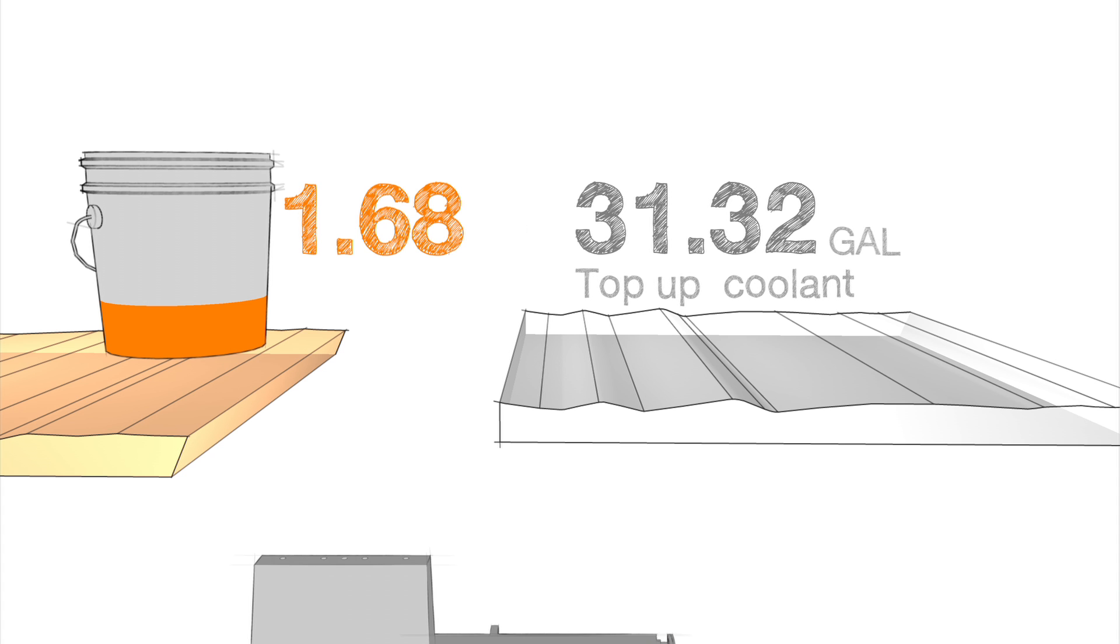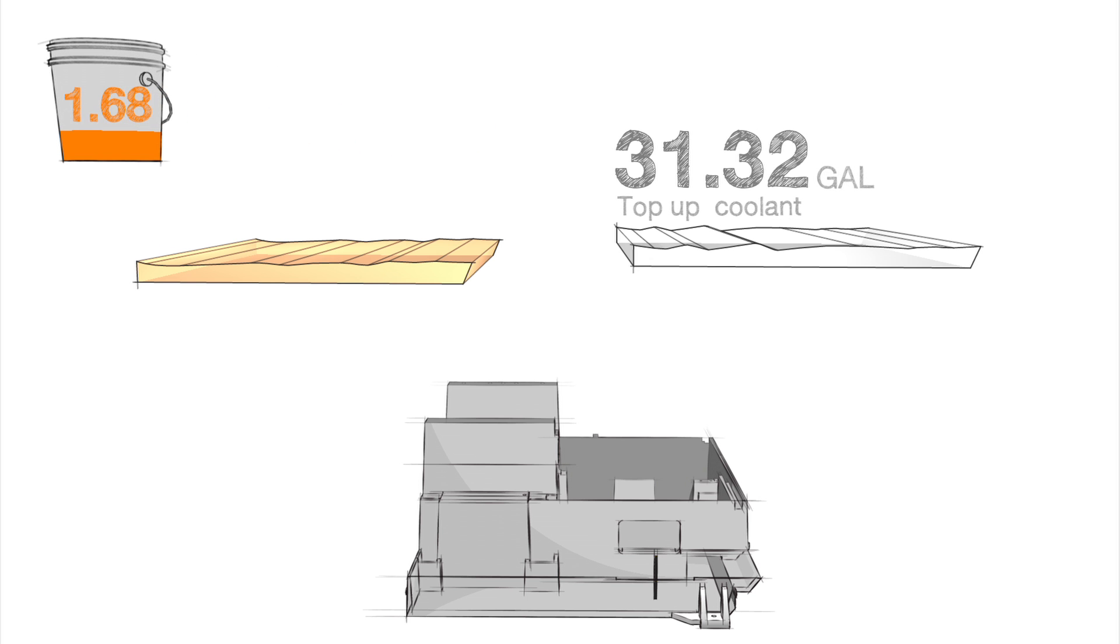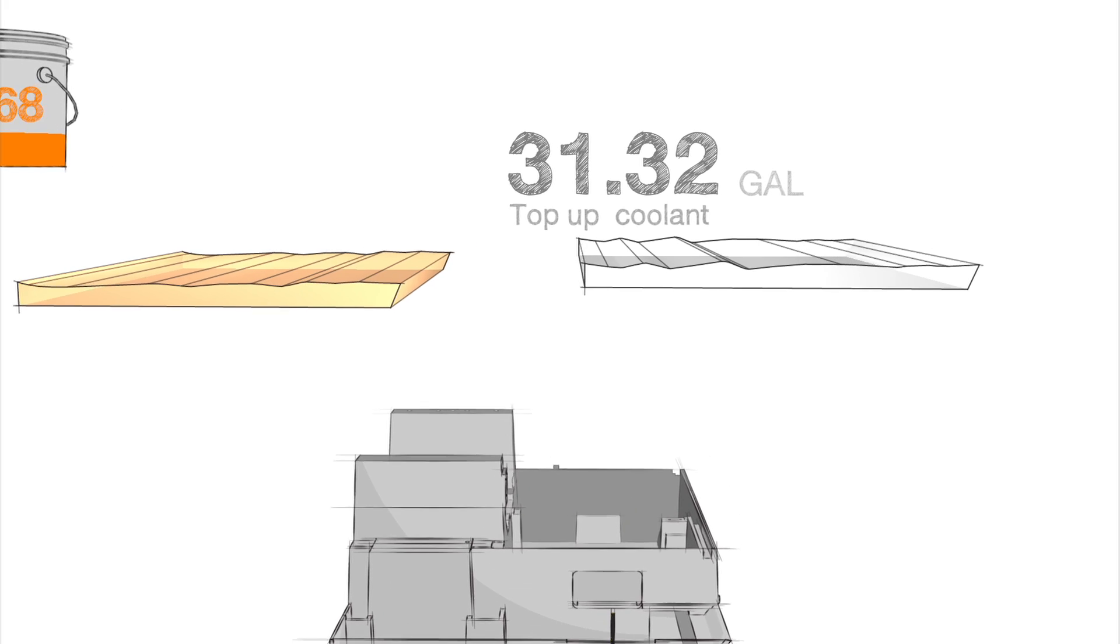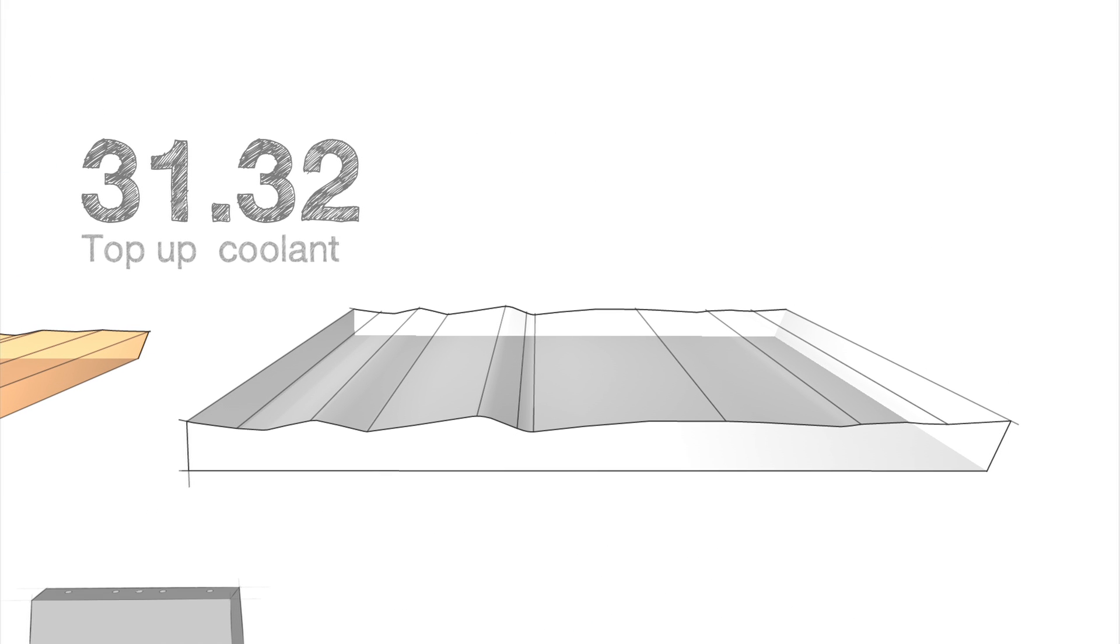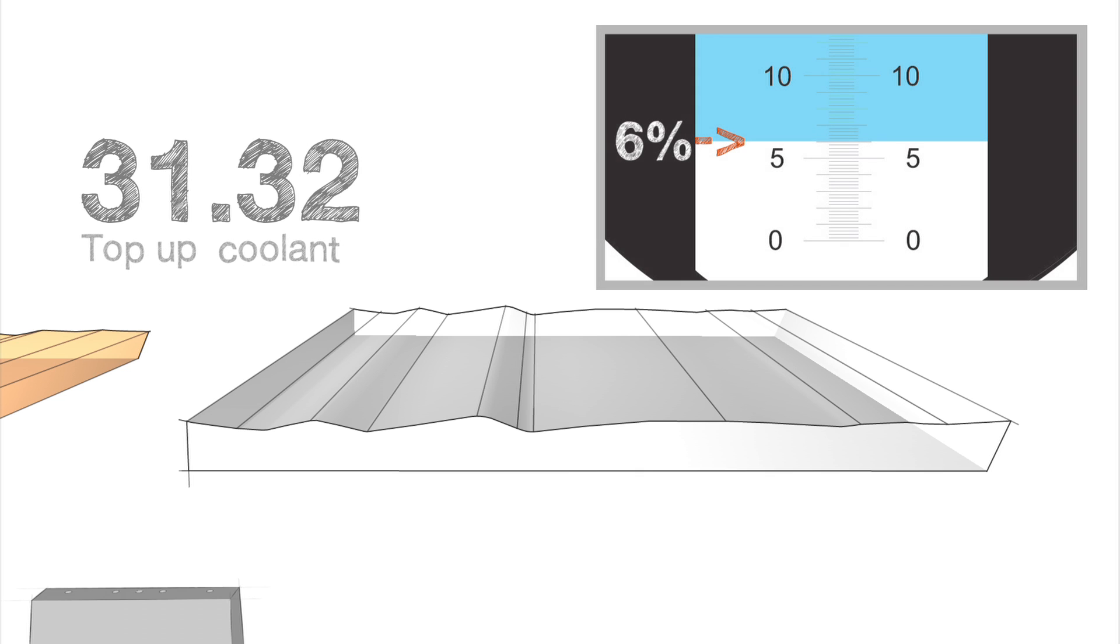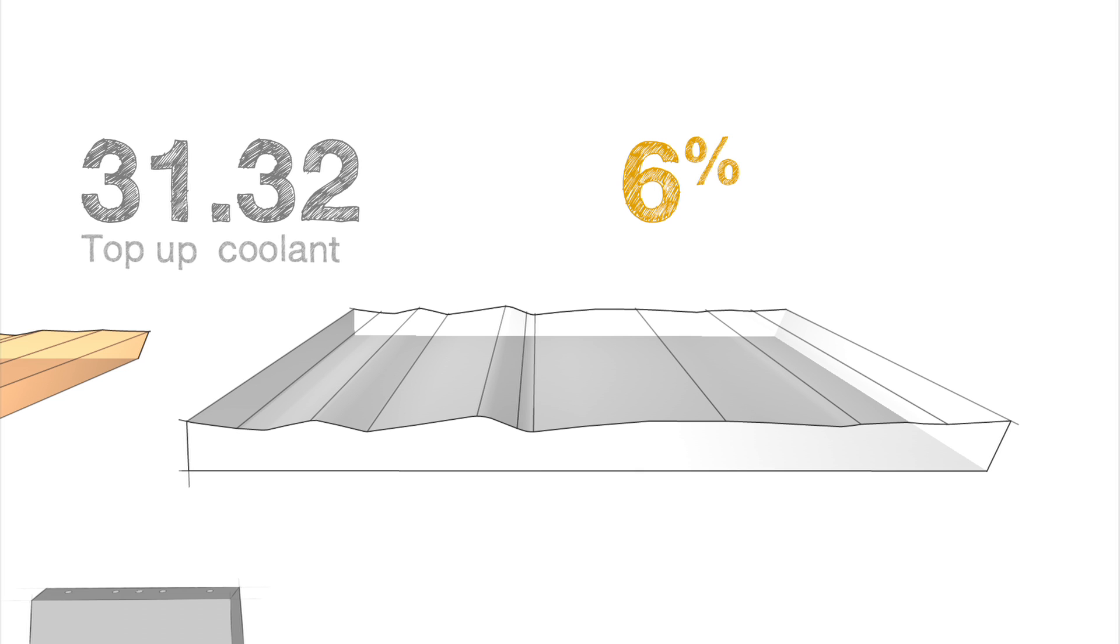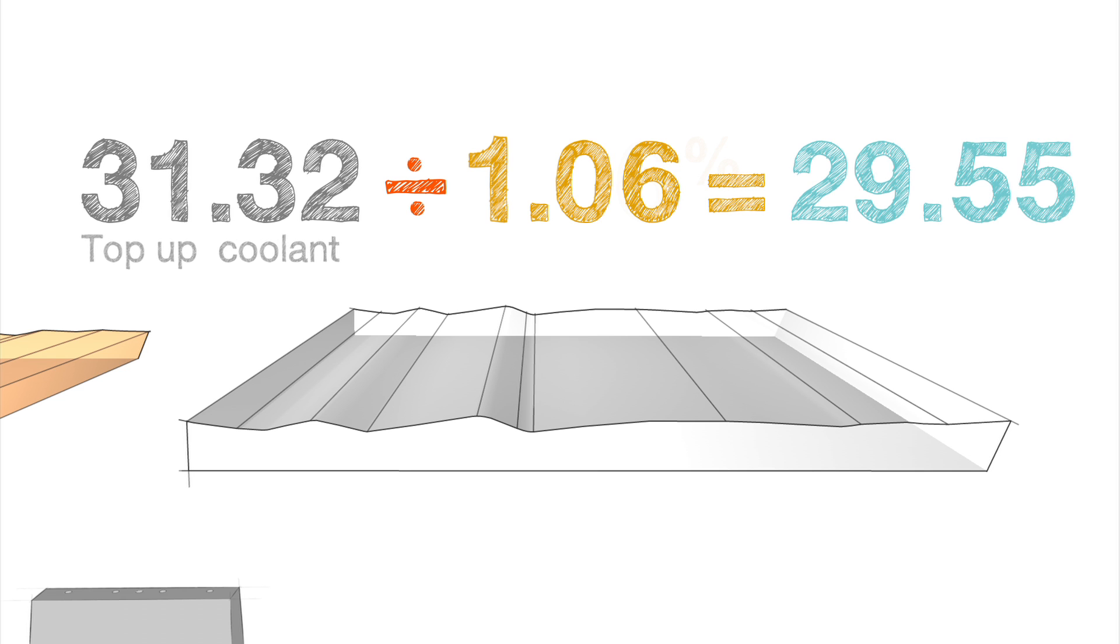Now let's set our 1.68 gallons of concentrate off to the side for a moment while we calculate how much concentrate we will need for the 31.32 gallons of top-up coolant. The top-up coolant must also be mixed at a 6 percent concentration, so we change 6 percent to 0.06 and then add a 1 to it. We divide our adjusted top-up quantity of 31.32 by the 1.06 number and find that we need 29.55 gallons of water.